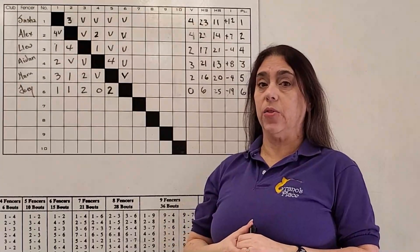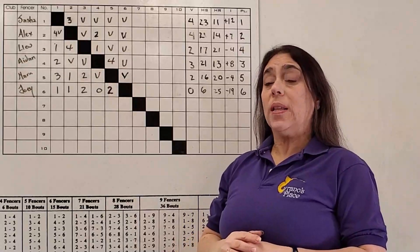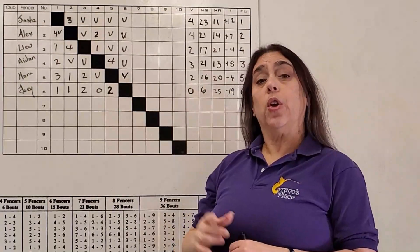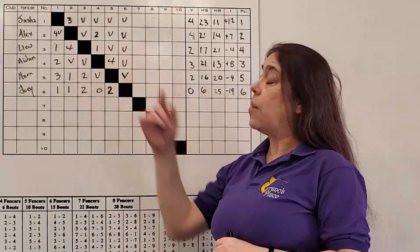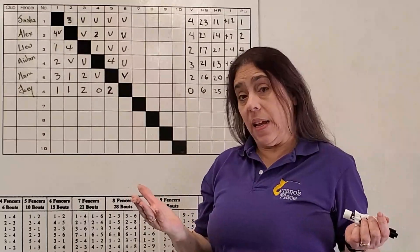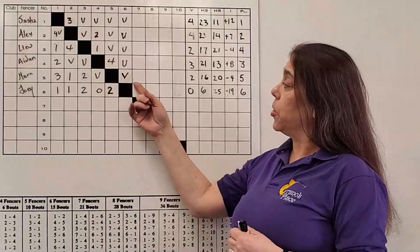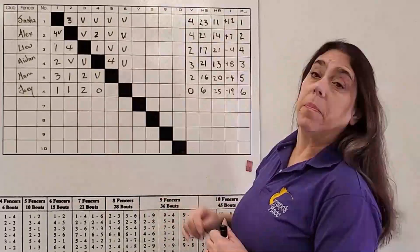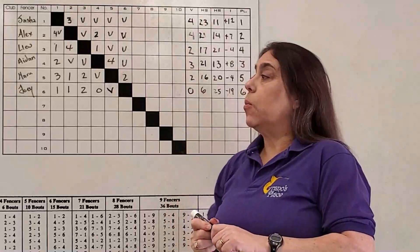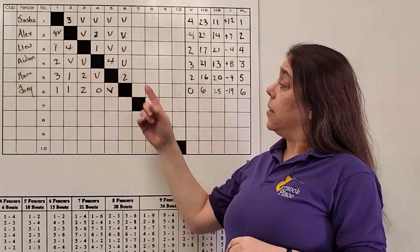After the pool is complete, every athlete is responsible for signing next to their name on the pool sheet. What signing the score sheet says is they agree with how the scores are written on the score sheet. Each athlete should check it and make sure the referee hasn't by chance made a mistake, a human mistake, not an intentional mistake, and maybe inverted the scores. So whereas Mara beat Joey here, maybe the referee wrote it backwards.